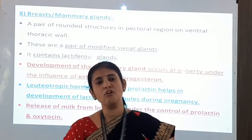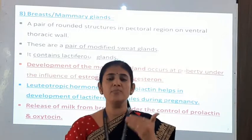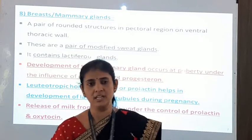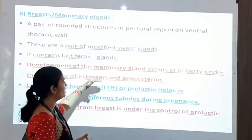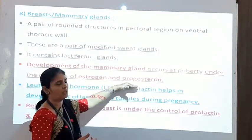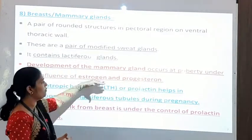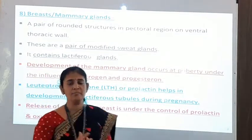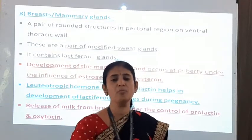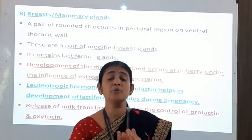The development and growth of mammary glands takes place at puberty age. This is a secondary sexual characteristic in the female body, occurring under the influence of two sex hormones: estrogen and progesterone. So development of mammary glands occurs at puberty under the influence of estrogen and progesterone.